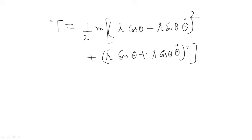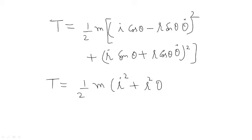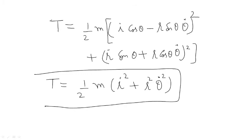Now if you solve this, then your final expression for kinetic energy in terms of the plane polar coordinate system becomes 1 by 2 m times (r dot squared plus r squared theta dot squared). This is a very important relation — you have to remember this. Thank you.